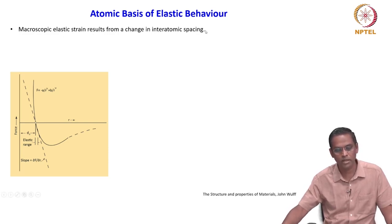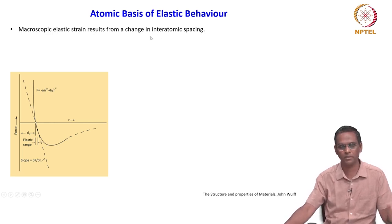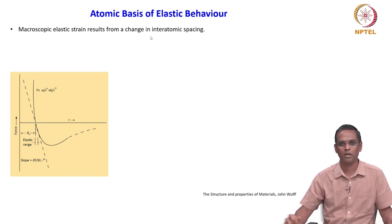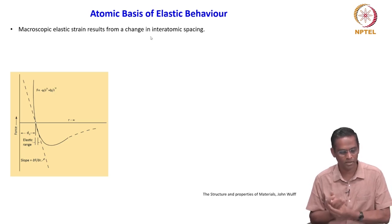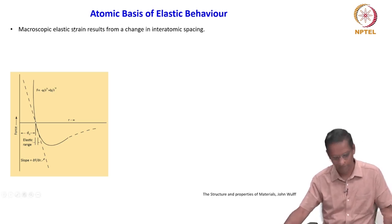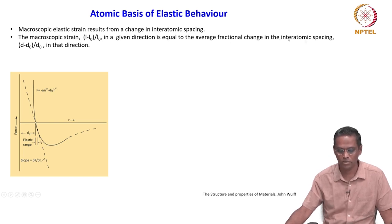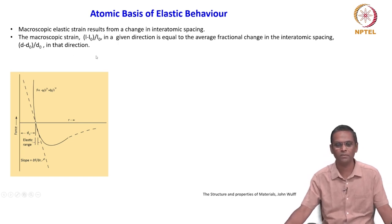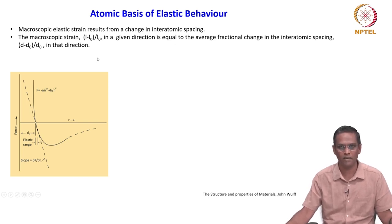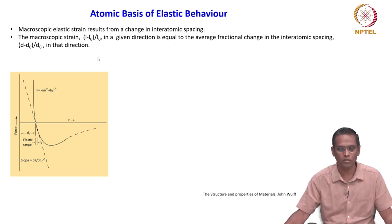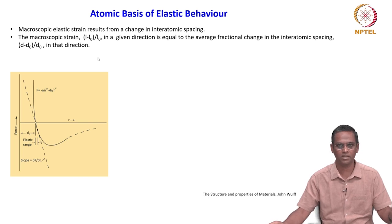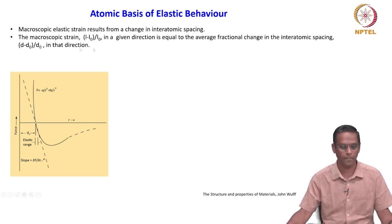Macroscopic elastic strain results from a change in inter-atomic spacing. We are talking about a bulk property now: macroscopic elastic strain resulting from the change in inter-atomic spacing. Macroscopic strain, which is L minus L naught by L naught in a given direction, is equal to the average fractional change in the inter-atomic spacing — that is D minus D naught by D naught in that direction. This is valid for a given direction.